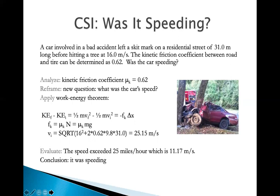The kinetic friction coefficient between the road and tire can be determined as 0.62. There can be experiments done to determine the friction coefficient, the exact one. Was the car speeding? Analyze this. The kinetic friction coefficient is 0.62. And reframe the question, because we do not really have a law that says was the car speeding or not. We cannot directly answer that with the physics law.